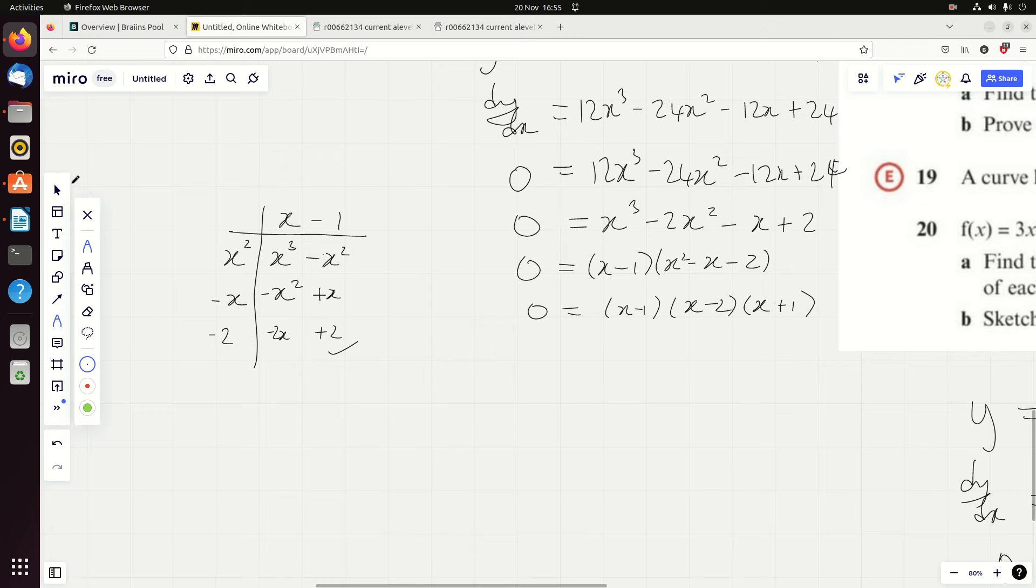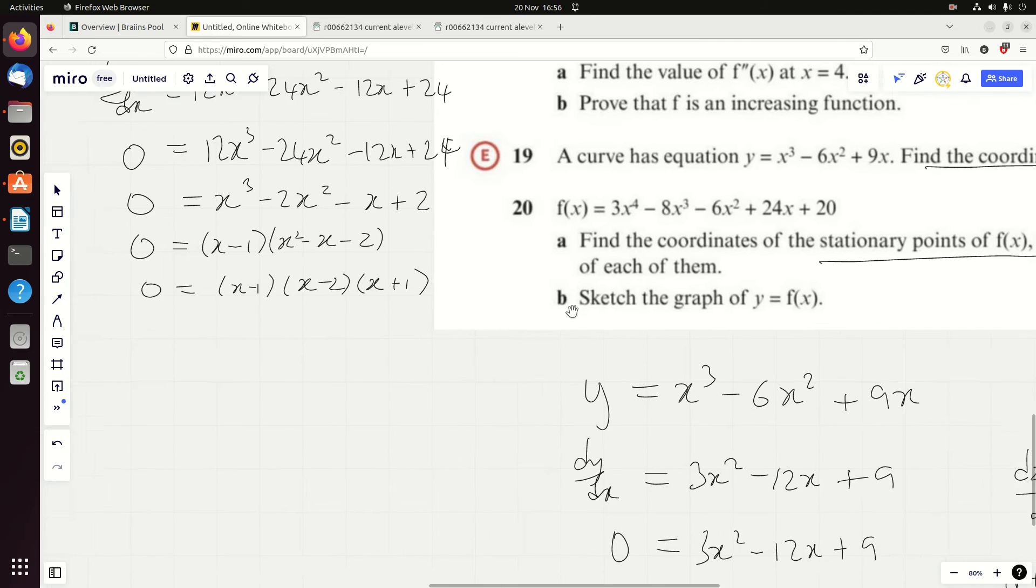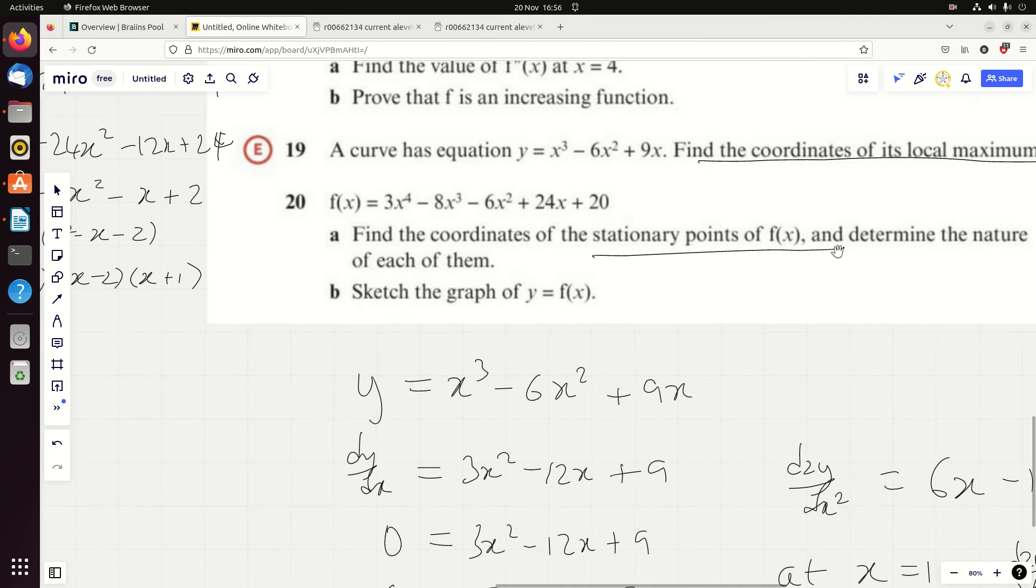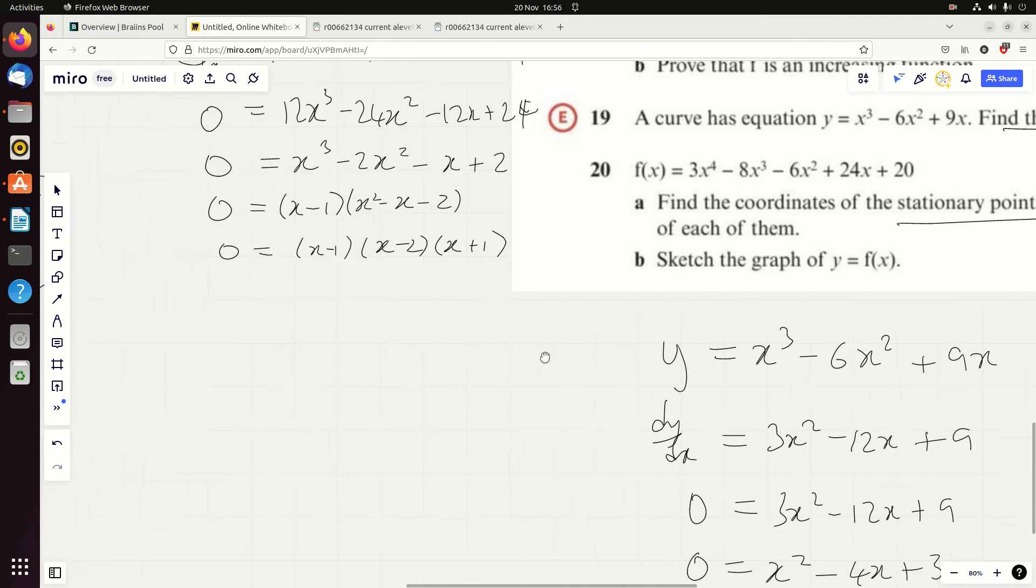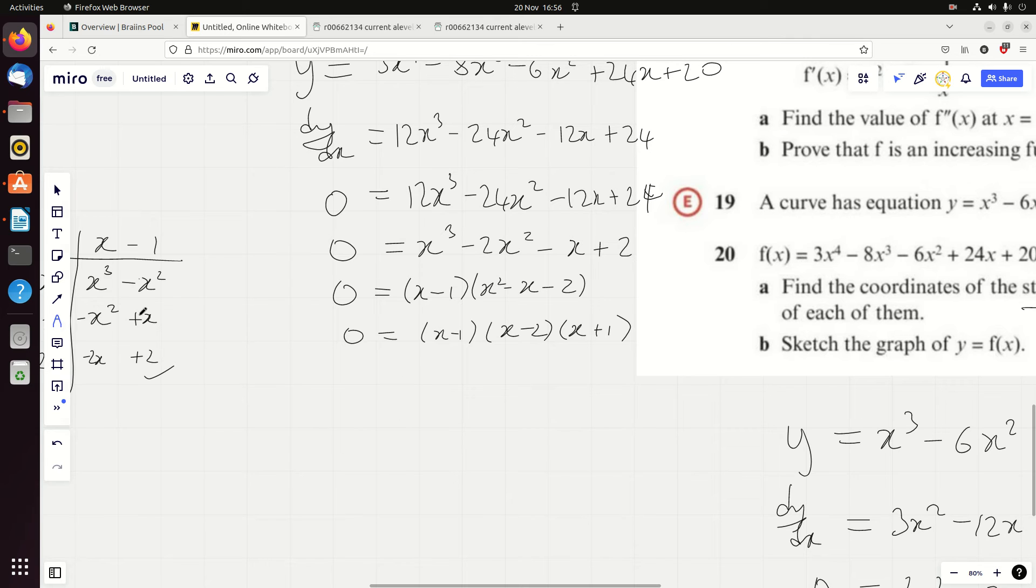So I get that, and now I factorize this: minus 2 and plus 1, I think. And so we get three roots: 1, 2, and minus 1, which is nice. Now we've found the coordinates of the stationary points; we haven't determined the nature of them yet.